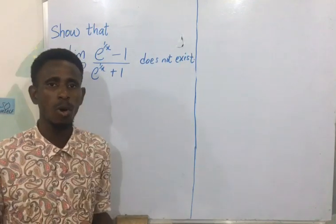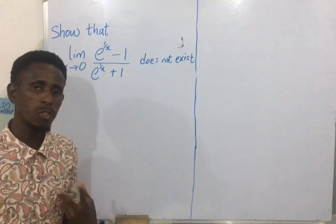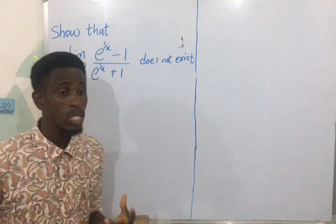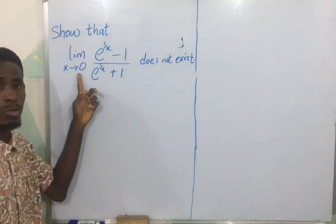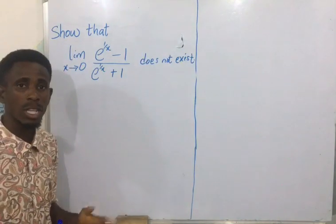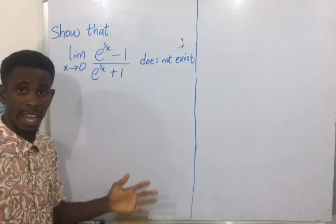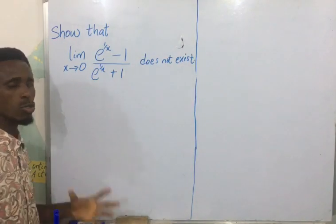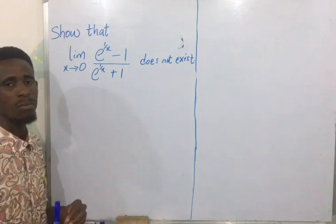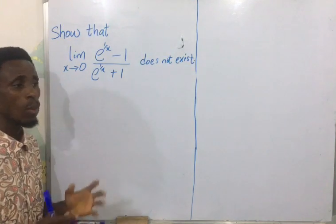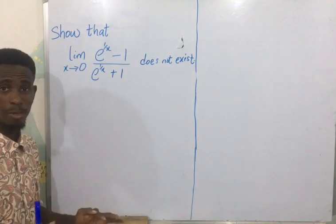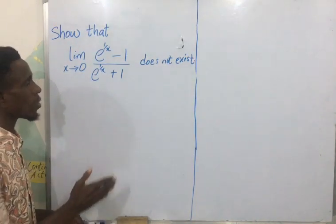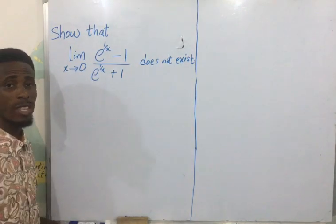To know if a limit exists, you have to check for the left-hand limit and for the right-hand limit. This one is at the origin, x equals 0. If both of them are the same, the limit exists. But if they are different, the limit does not exist. So the question is to show that this limit does not exist.